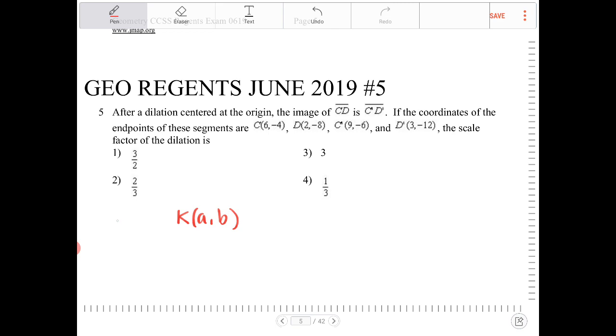So if the original coordinate was a comma b and you want to dilate by a factor of k over the origin, then the new coordinates will become k times a comma k times b.